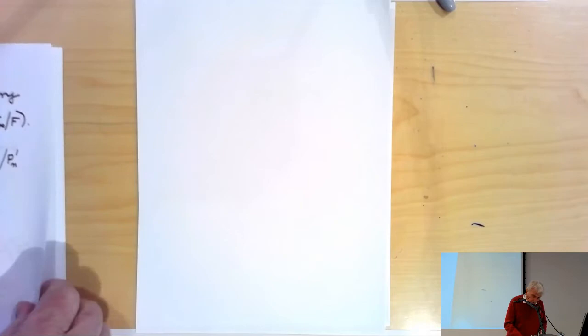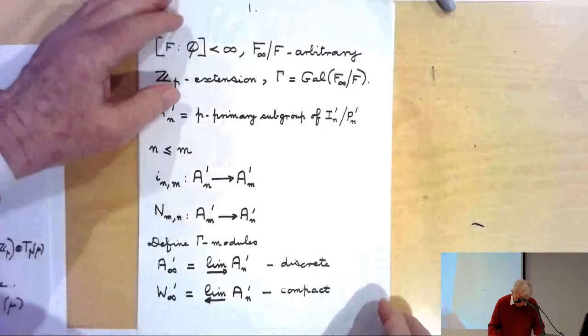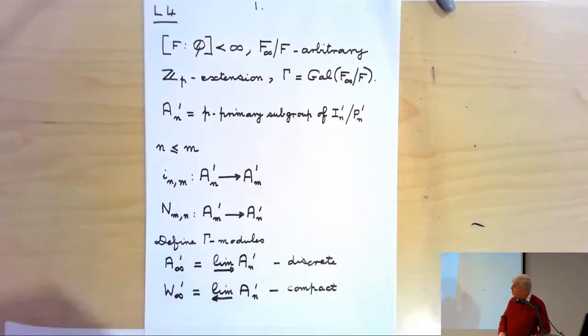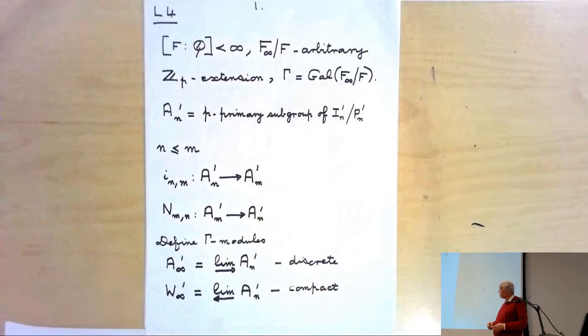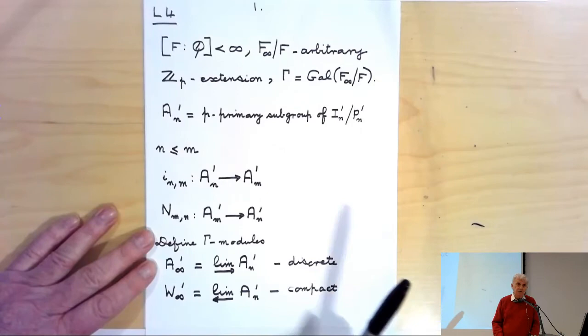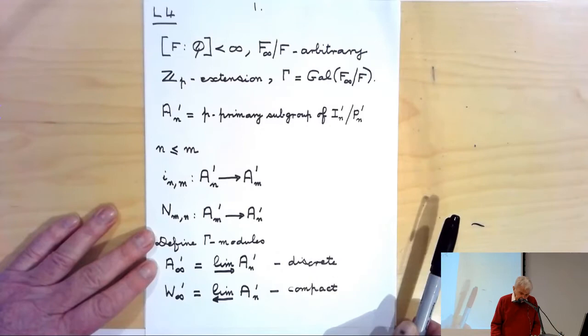What I want to do today is to finish this proof of Iwasawa's theorem. I want to prove what I call Theorem A. So let me remind you what that is. The base field F is an arbitrary finite extension of Q, and now I can take any ZP extension F∞ over F. Theorem A will be proved for an arbitrary ZP extension — in no way do we need a cyclotomic one.